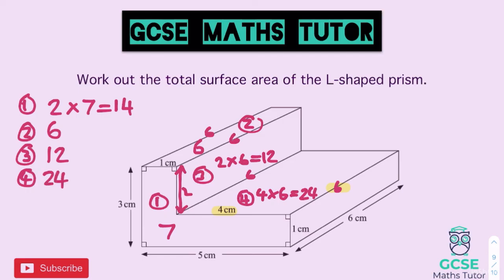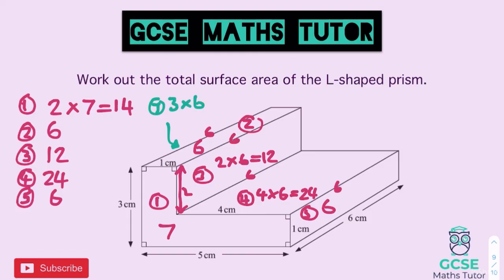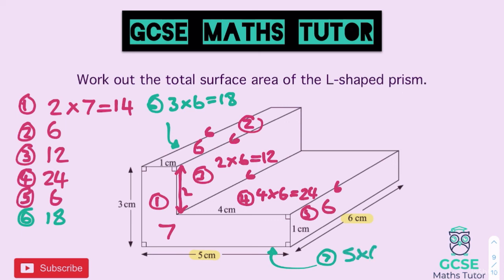For face five — another visible face — the height is one and the depth is six, so the area is six. For face six — the back face we can't see — the full height is three and the depth is six, so three times six gives an area of eighteen. For face seven — the bottom which we can't see — five times six gives an area of thirty.